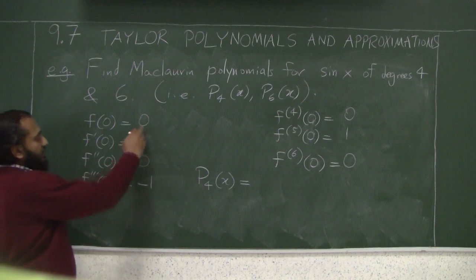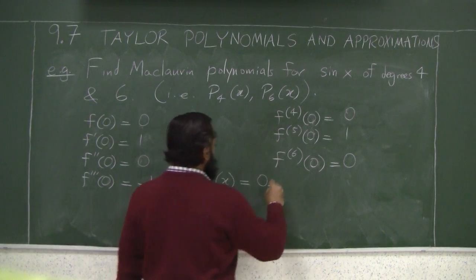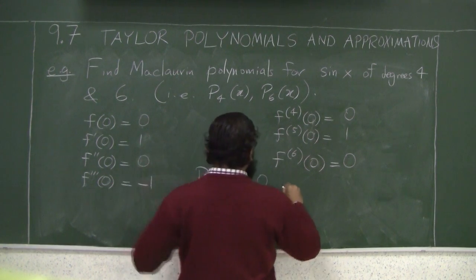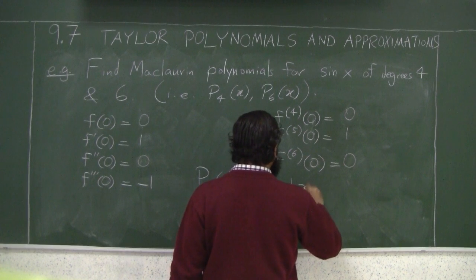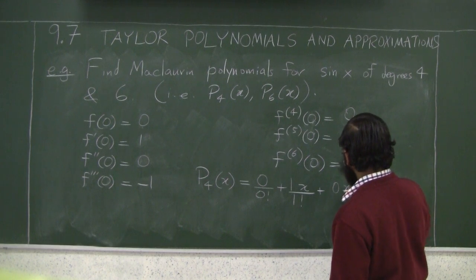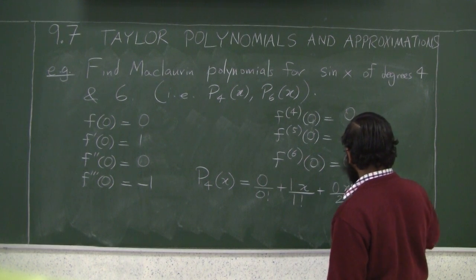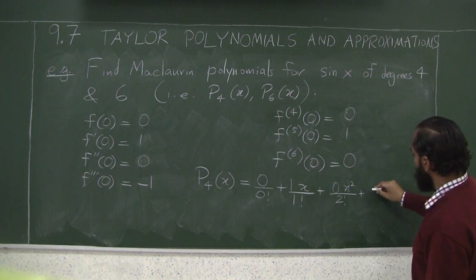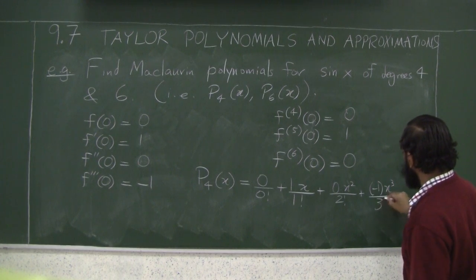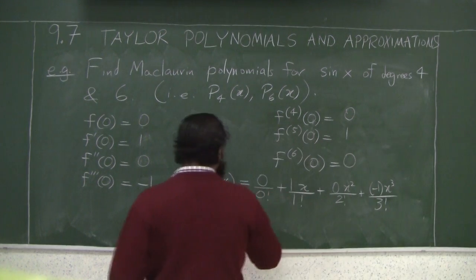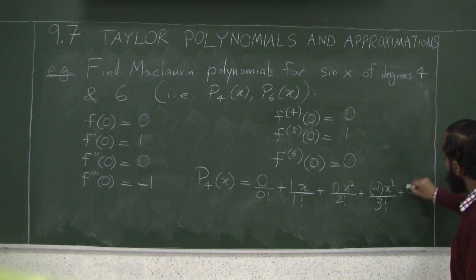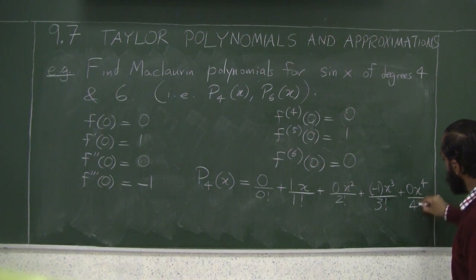So it would be 0, the constant term, plus 1x over 1 factorial, plus 0x squared over 2 factorial, plus negative 1x cubed over 3 factorial, plus 0x to the fourth over 4 factorial.